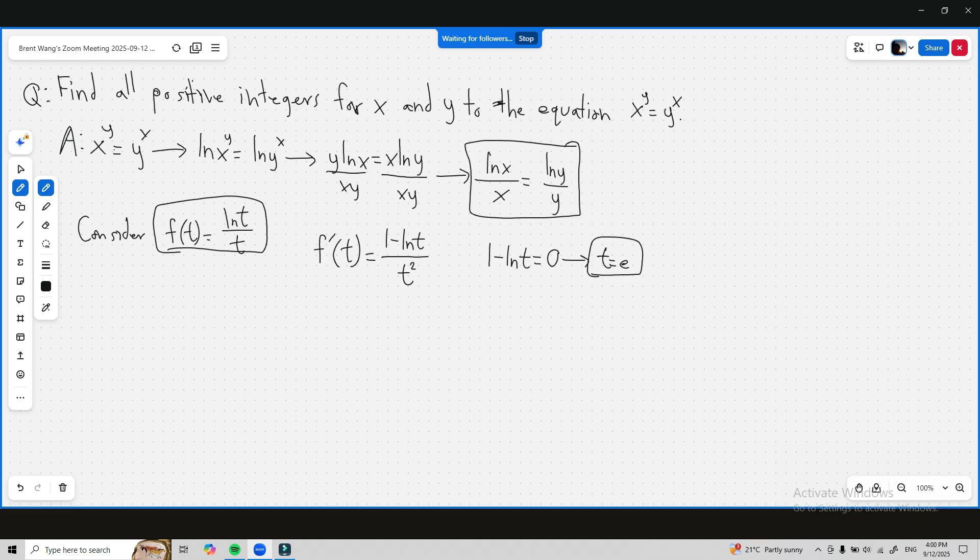And here's the graph of what ln t over t looks like. I'm just gonna do a rough sketch, ignore the scaling and everything. So f and this is t, you have zero right here, and it looks something like this if you were to graph this out.